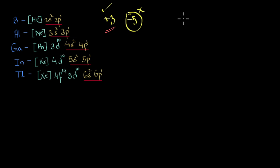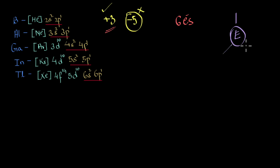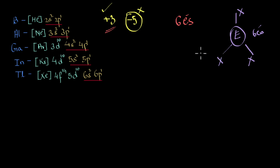In the +3 oxidation state, the central atom ends up having only six electrons around it. For instance, let's assume E is one of the group 13 elements. Whether these elements lose electrons or share electrons with another atom, the central atom has only six electrons around it — an incomplete octet. This inherent electron-deficient nature allows us to use these compounds as Lewis acids.